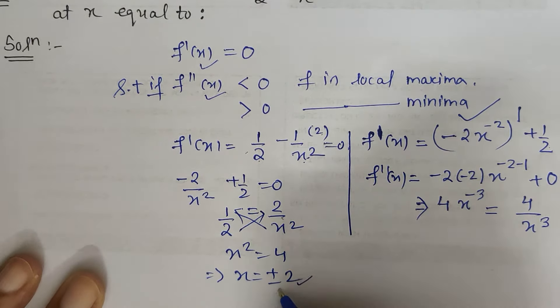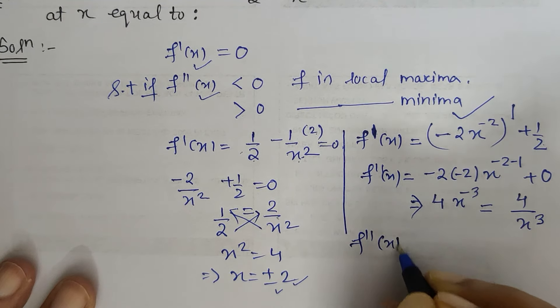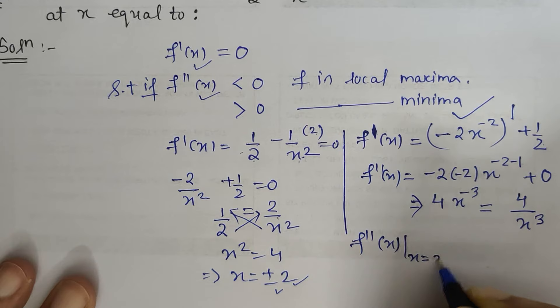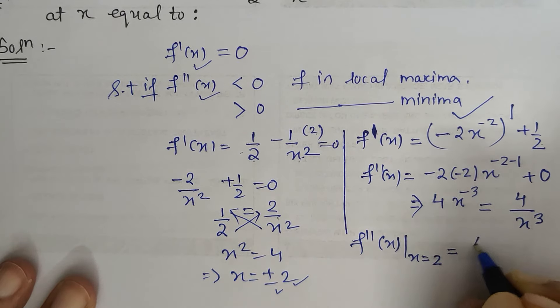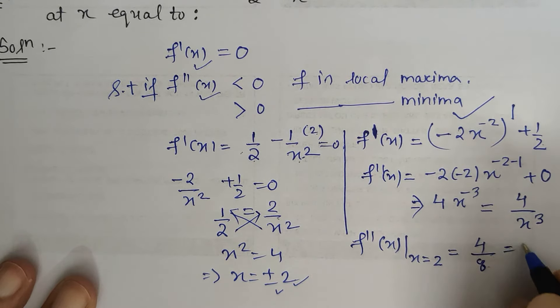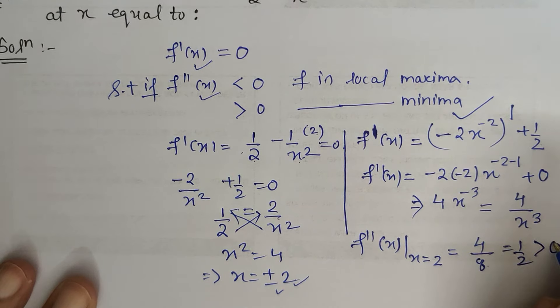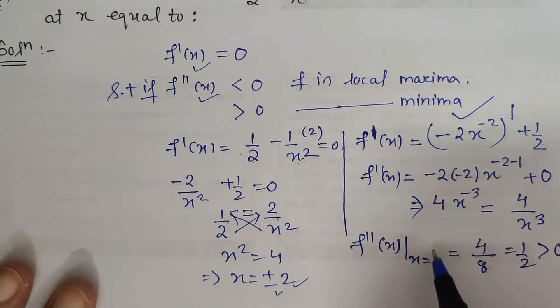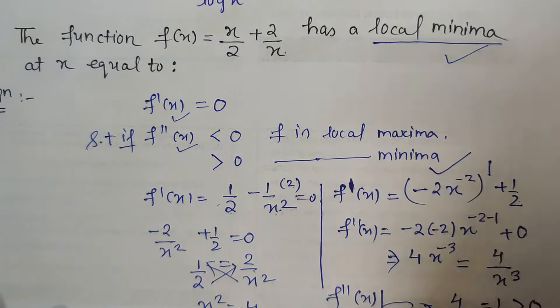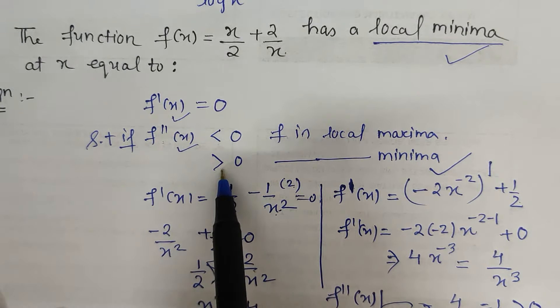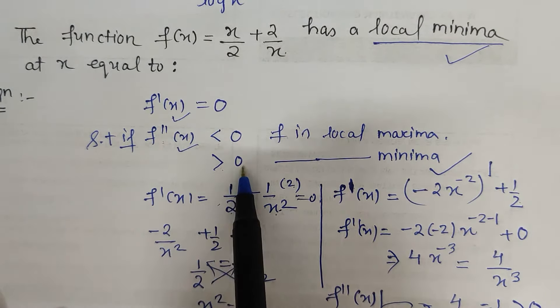I will check the behavior of f''(x) at both critical points. At x = 2 first, it is 4/8 which is 1/2, greater than 0. This gives us x = 2 as the point of local minima, because if f''(x) is greater than 0, f has local minima.